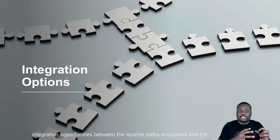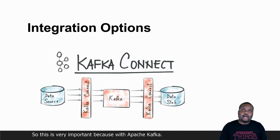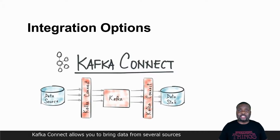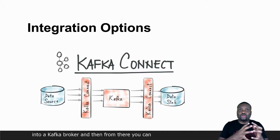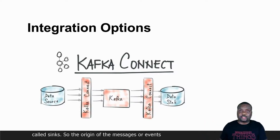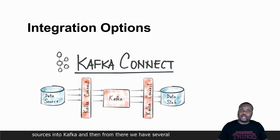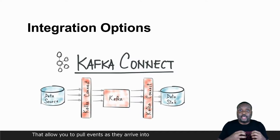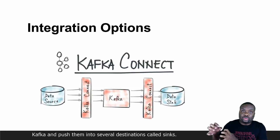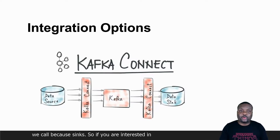The next thing I want to talk about is integration opportunities between the Apache Kafka ecosystem and the Microsoft Azure platform solutions and products. With Apache Kafka, we have a component called Kafka Connect. Kafka Connect allows you to bring data from several sources into a Kafka broker, and from there you can route these messages or events into different destinations called syncs. The origin of the messages or events are called data sources, and we have several connectors that allow you to bring data from other sources into Kafka.